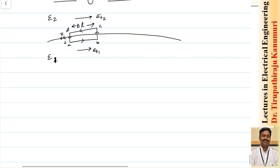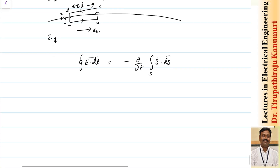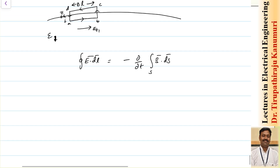Now, to find the electric field we use the closed integral of E dot dl equal to the partial derivative with respect to time of the surface integral of B dot ds, as derived from Maxwell's equations.